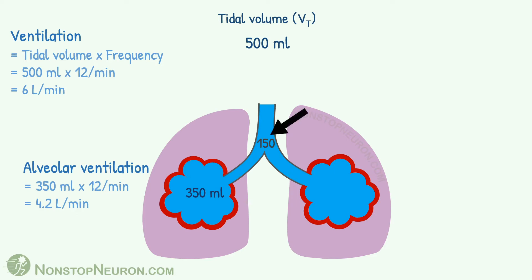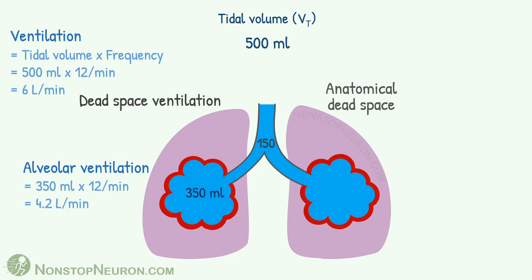Coming to this 150 ml — as it stays in the conducting airway, it does not contribute to gas exchange. So this space is called anatomical dead space. Ventilation of this space is called dead space ventilation. Anatomical dead space of 150 ml multiplied by 12 breaths per minute gives dead space ventilation of 1.8 liters per minute.